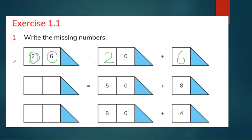Let's move on to the next question. Here we have 50 and 8. So 8 ones and 5 tens make 58 — 50 plus 8 is 58. We write 8 in the ones box. How many tens? Five tens. So it's 58.